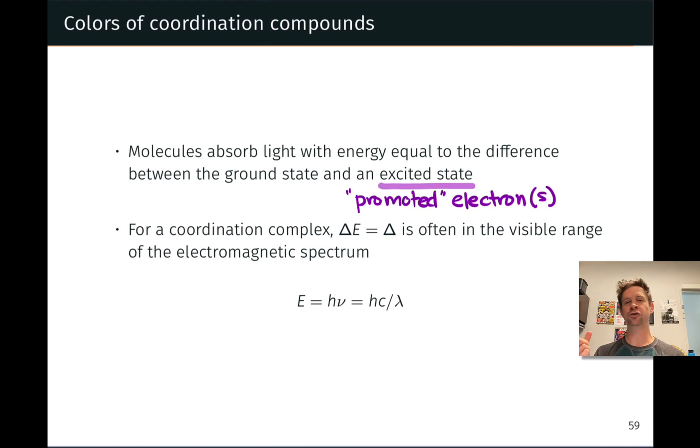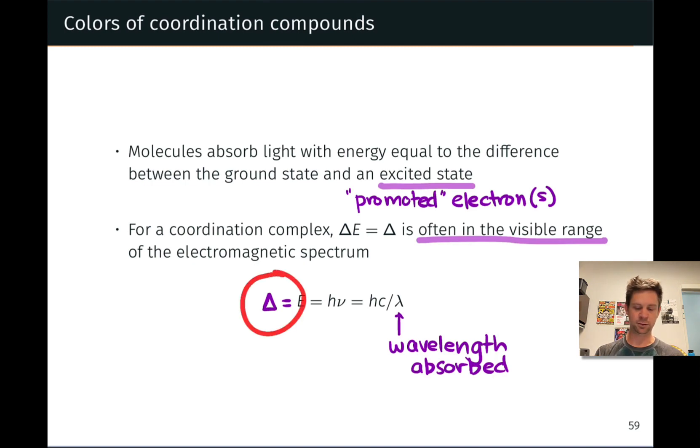We can relate the energy of the photon absorbed and the energy gap, the crystal field splitting gap delta, to a wavelength via the relation between photon energy and wavelength. E equals Planck's constant times the speed of light divided by lambda. So we can relate the crystal field splitting delta, here on the left hand side of this equation, with a wavelength of light absorbed.